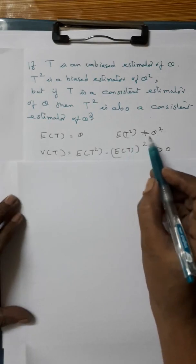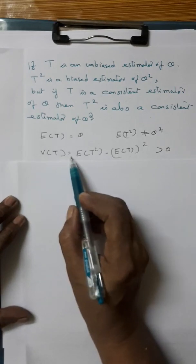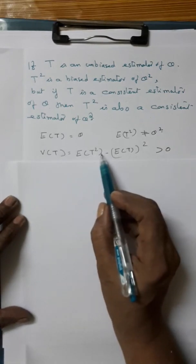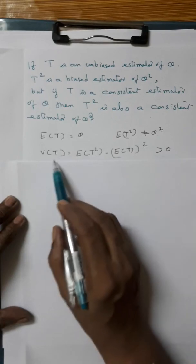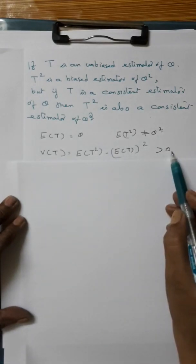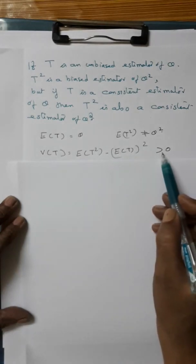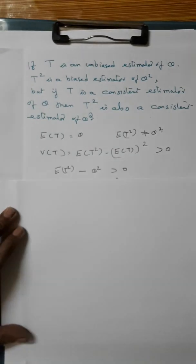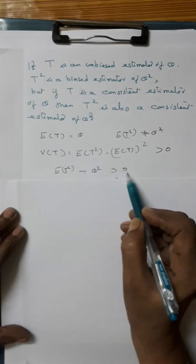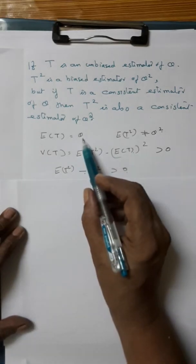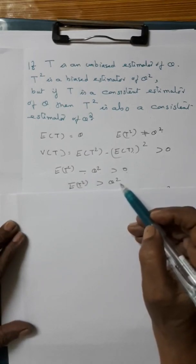For showing E of T squared is not equal to theta squared, let us write the variance of T, which equals E of T squared minus E of T, all squared. We know that variance of T is always greater than zero. Therefore, E of T squared minus E of T all squared is greater than zero. That is, E of T squared minus theta squared is greater than zero, since E of T equals theta. That is, E of T squared is greater than theta squared.